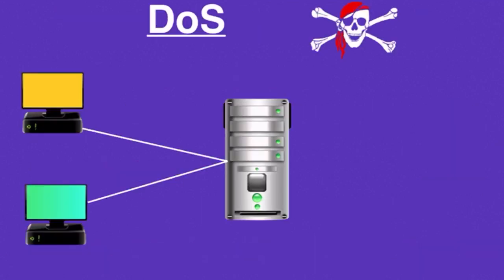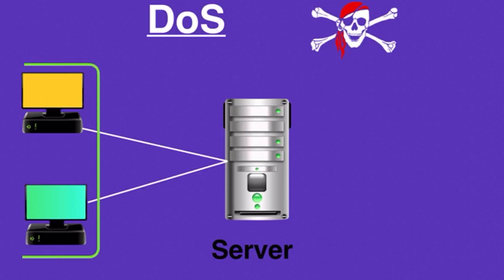A DOS attack is executed from one place. Let's say we have a web server, and this server belongs to a company that sells its products on the internet. And over here we have a couple of buyers who are checking the company's website, looking at the products.